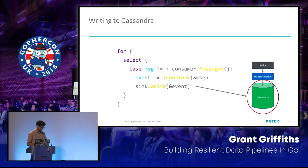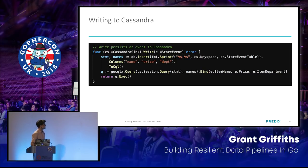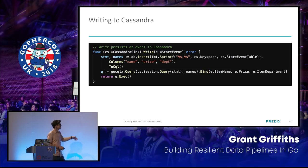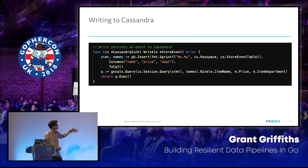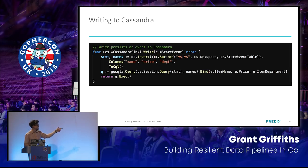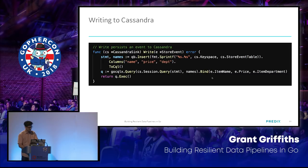Writing to Cassandra is pretty straightforward. You have a prepared statement with your columns, and then you do data bindings with GoCQLX — you do a GoCQLX query that binds your statement to all the struct elements of the event type: event.itemName, event.price, and event.itemDepartment. Then you execute that query and return the error back upstream.